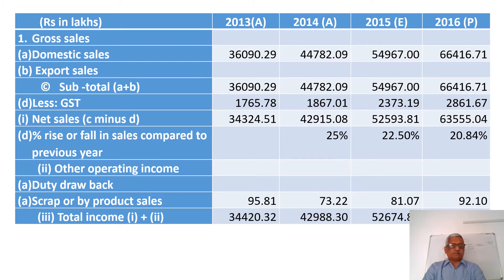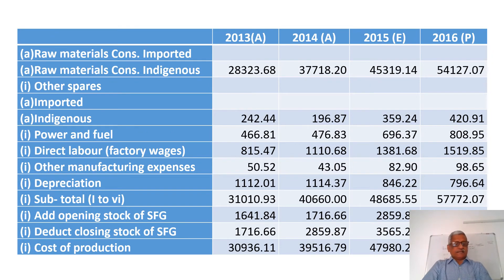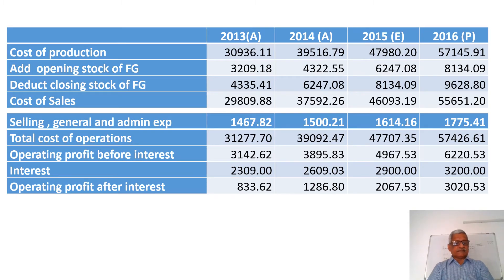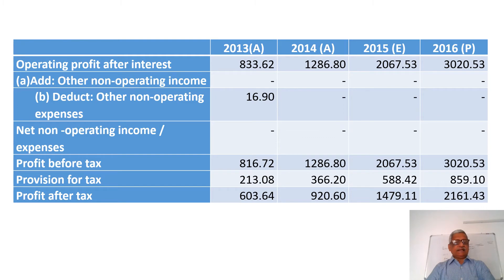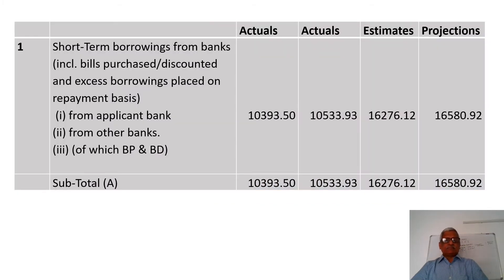It also shows the percentage of fall in sales compared to the previous year, any other operating income, total income, raw material consumption, cost of production, cost of sales, total cost of operation, and operating profit before and after interest, along with the addition of non-operating income and deduction of non-operating expenses.